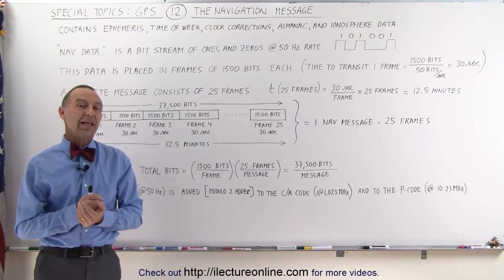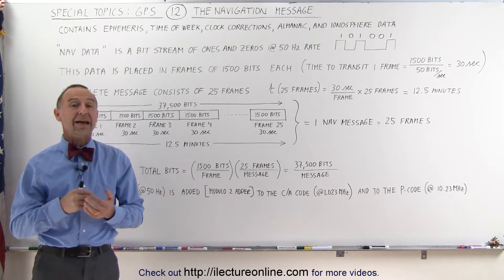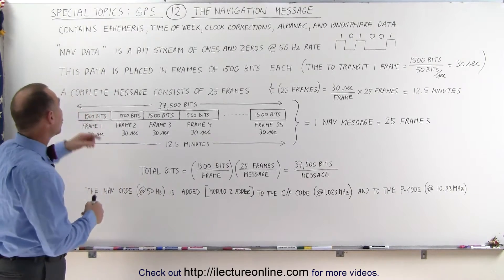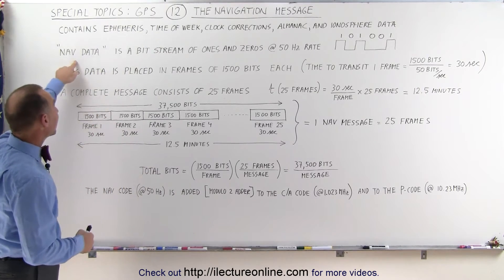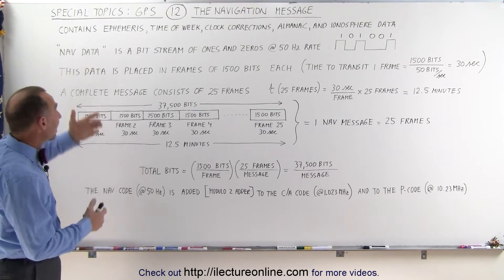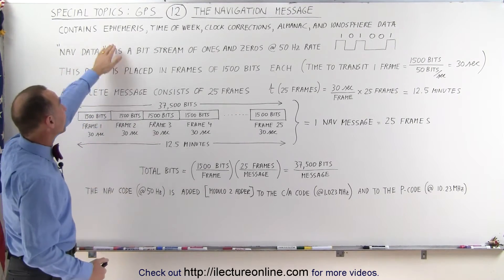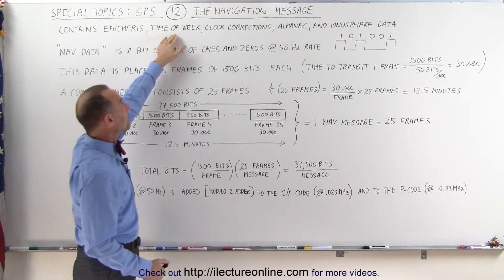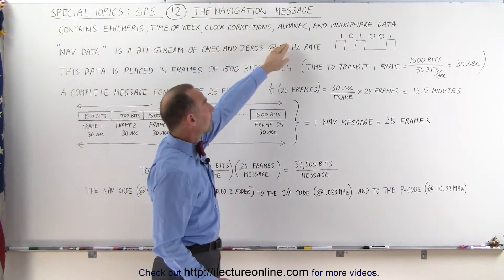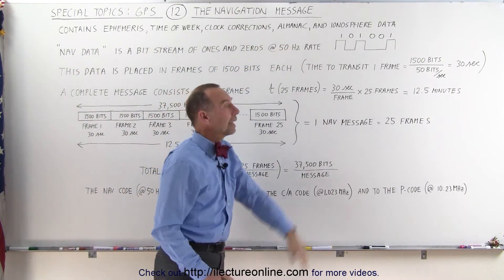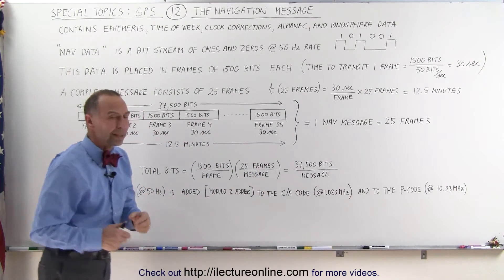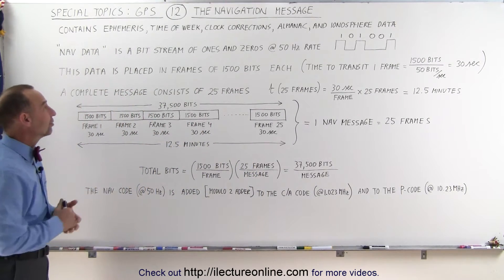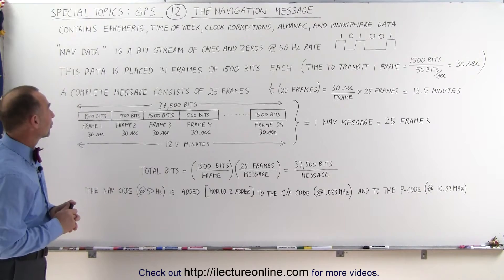Welcome to ElectronLine. Now let's take a look at the navigation data. The navigation data, also known as the nav data, contains the following: it contains the ephemeris, the time of the week, the clock corrections, the almanac, and the ionosphere data, and a few other things. We'll get into the details of what those things are in the next videos.